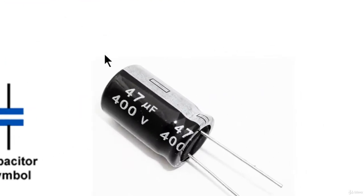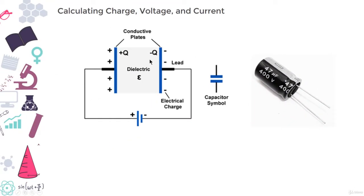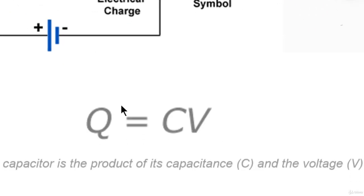So capacitor's capacitance tells you how much charge it can store. How much charge a capacitor is currently storing depends on the potential difference, which is the voltage, between its plates. This relationship between charge, capacitance and voltage can be modeled with the following equation.